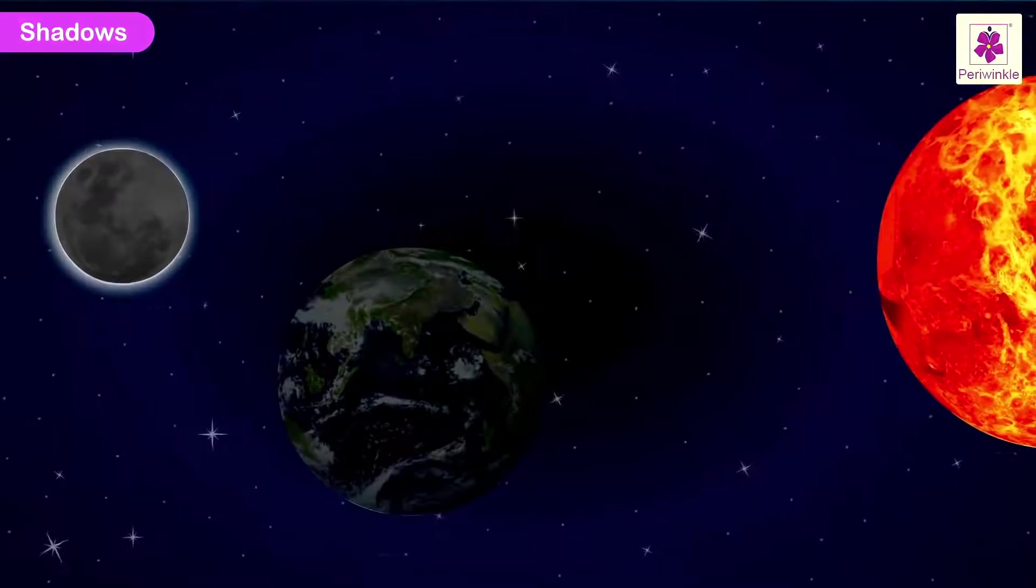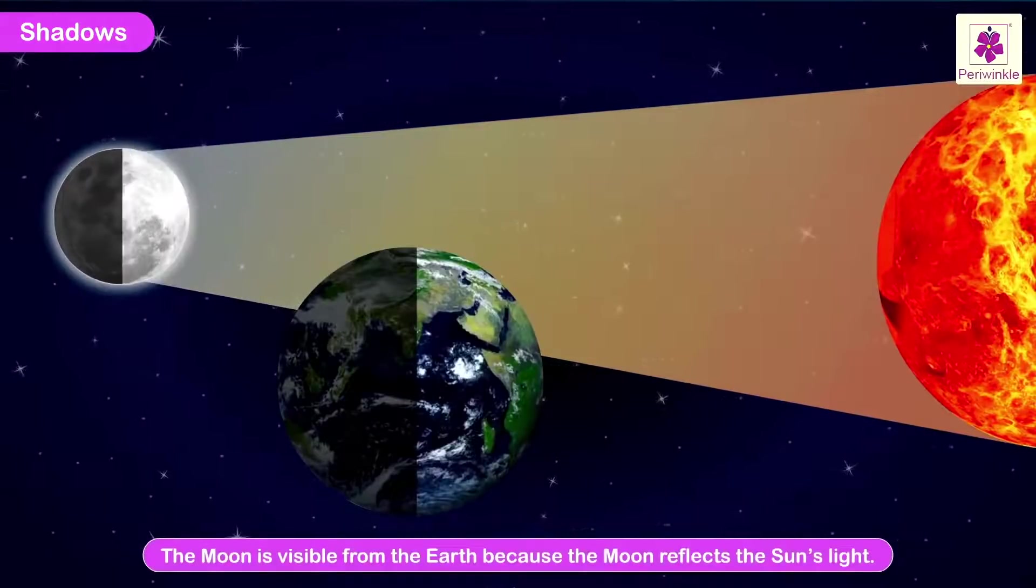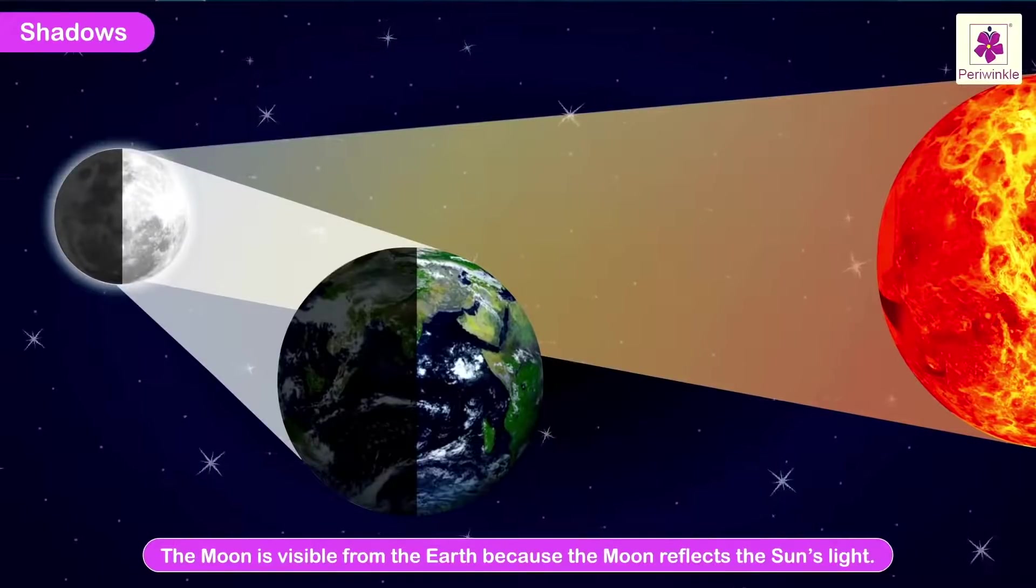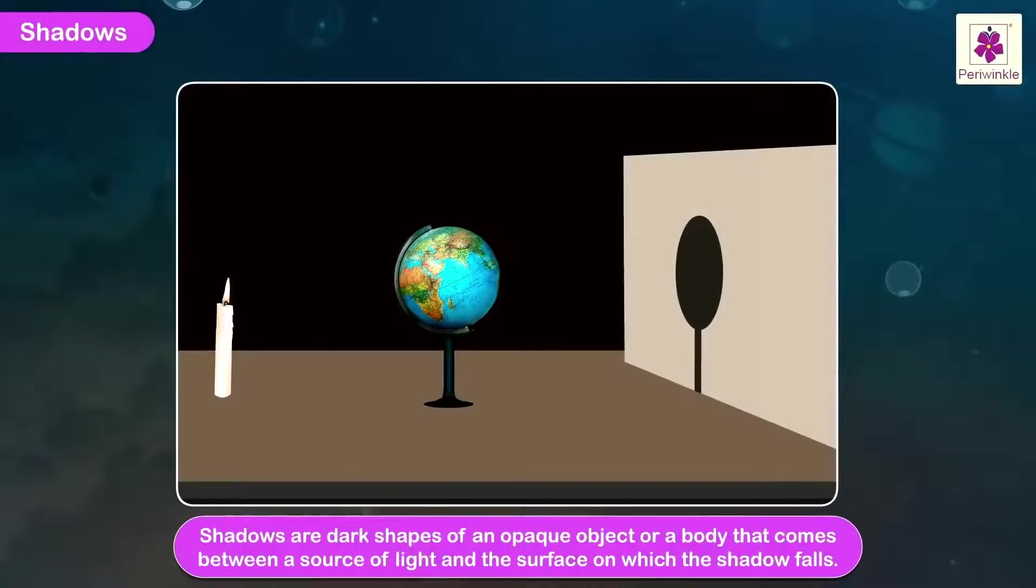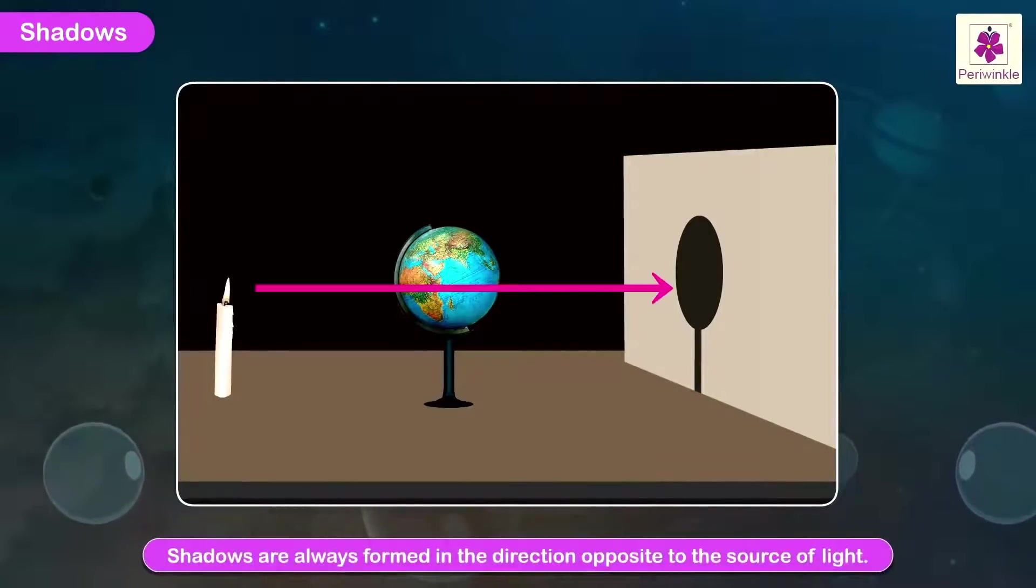Shadows. We have learnt that the Moon is visible from the Earth because the Moon reflects the Sun's light. Let us understand more about how shadows are formed on Earth. Shadows are dark shapes of an opaque object or a body that comes between a source of light and the surface on which the shadow falls. Shadows are always formed in the direction opposite to the source of light.